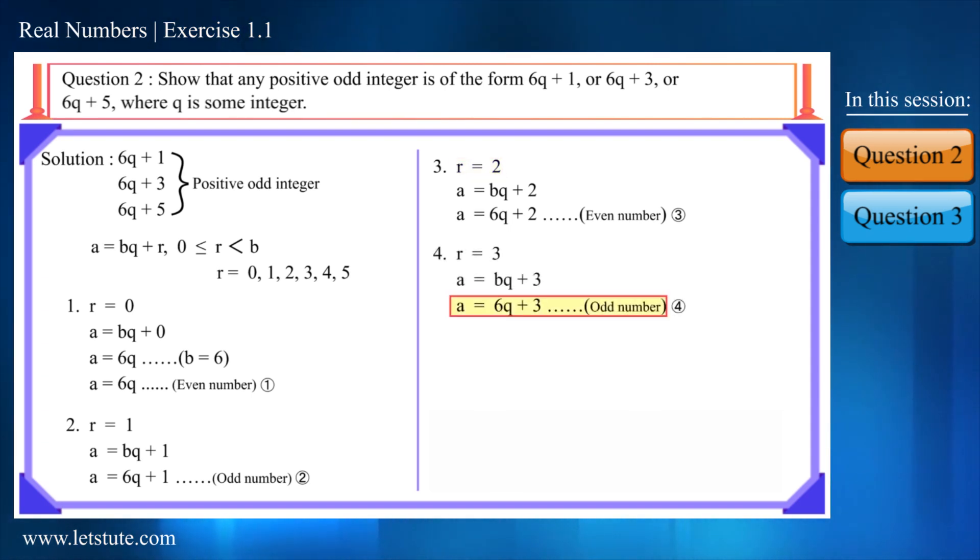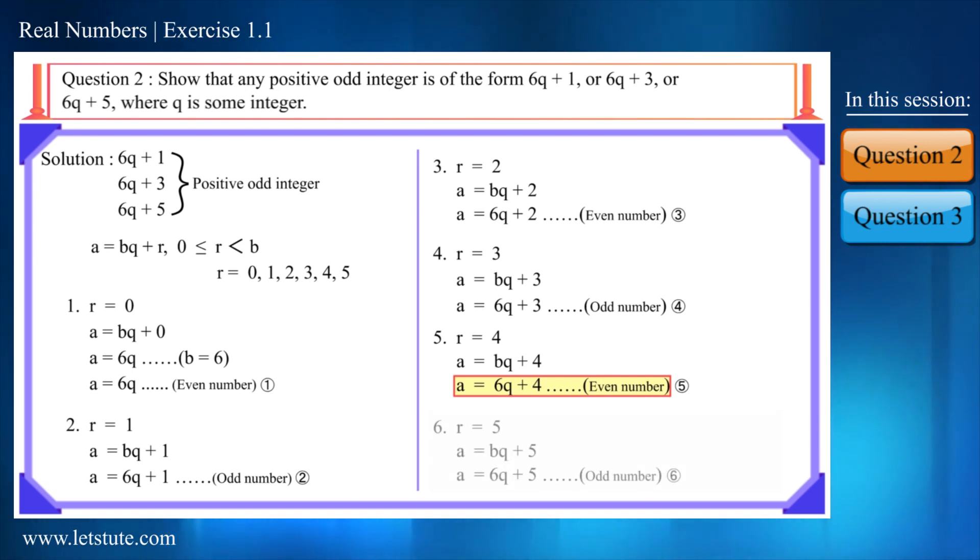Similarly, 6q plus 3 is an odd number, 6q plus 4 is an even number and 6q plus 5 is an odd number.